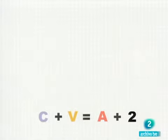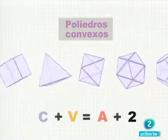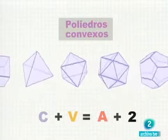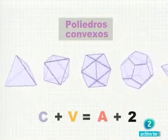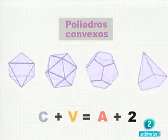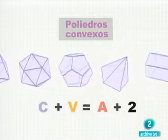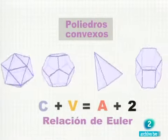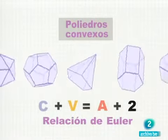Y esto ocurre con cualquier poliedro convexo. Euler fue el primero, no solo en darse cuenta de esta relación, sino en demostrar que sería así con todos ellos. A la relación, caras más vértices, igual a aristas más dos, se la conoce desde hace más de 250 años como la relación de Euler.